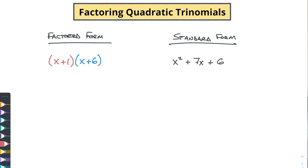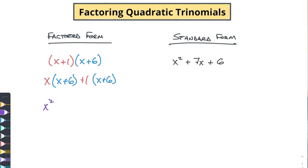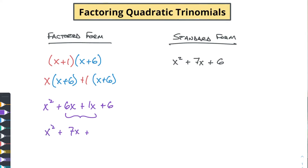We're going to take our red x and multiply it by x plus six, and then take our red one and multiply it by x plus six. That gives us x times x which is x squared, x times six which is plus six x, one times x which is another x, and one times six which is plus six. When we simplify those middle pieces together we end up with x squared plus seven x plus six.